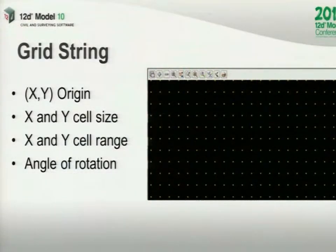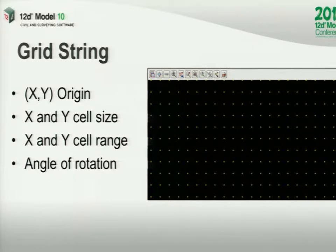So what is a grid string? This is the first thing that's in version 10. All it is is a string which basically has a lot of regular points on it. So it has an origin, a cell size, x and y cell size, and a range where they're going to be, and then an angle rotation. So it doesn't have to be flat on the screen — it can actually be on an angle.